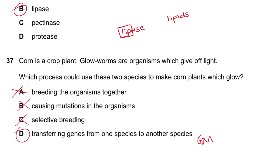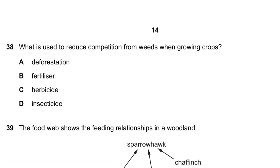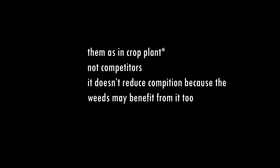Question 38: What is used to reduce competition from weeds when growing crops? Deforestation — no. From weeds means a herbicide is needed. Insecticide and fertilizer don't reduce weed competition. Answer is herbicide.